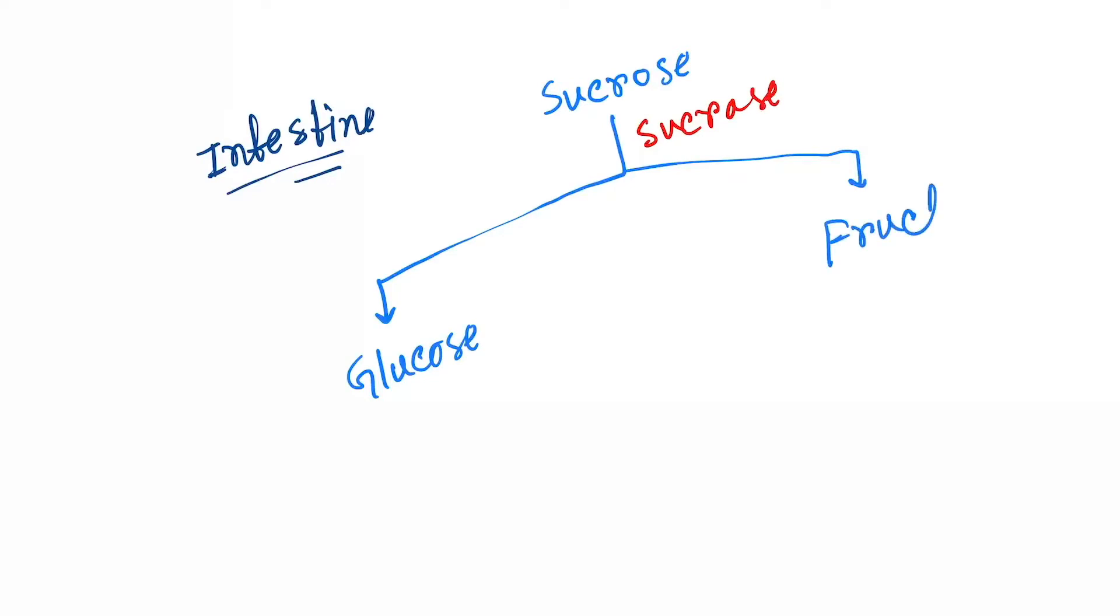First, in the intestine, there is sucrose. By the intestine brush border sucrase, one enzyme will act - that is sucrase - which will cause breakdown of sucrose into glucose and fructose. As I told you earlier, the direct sources of fructose are fruits and honey.